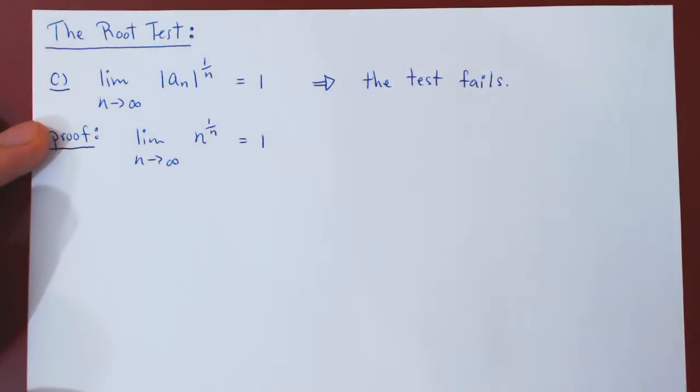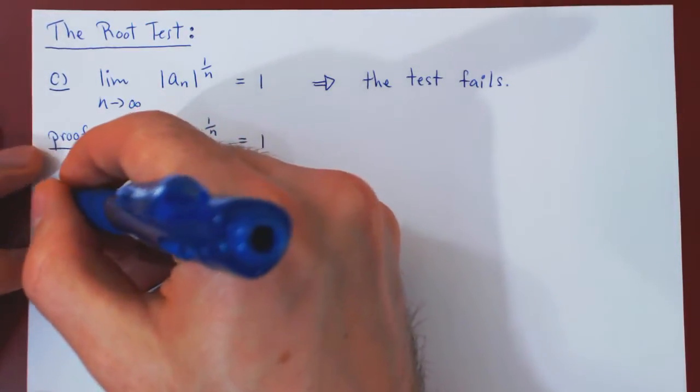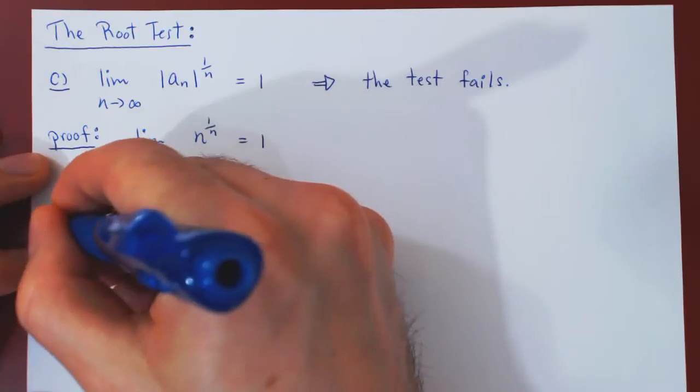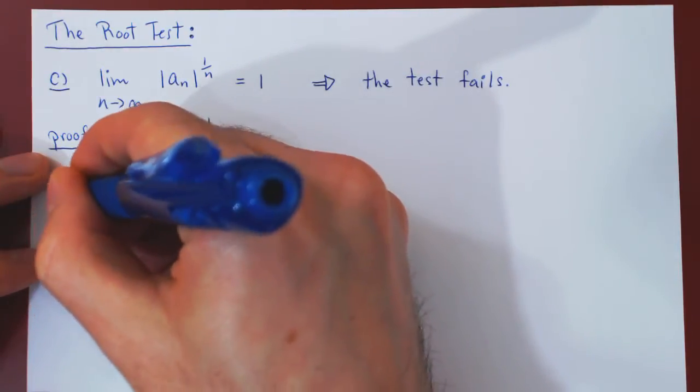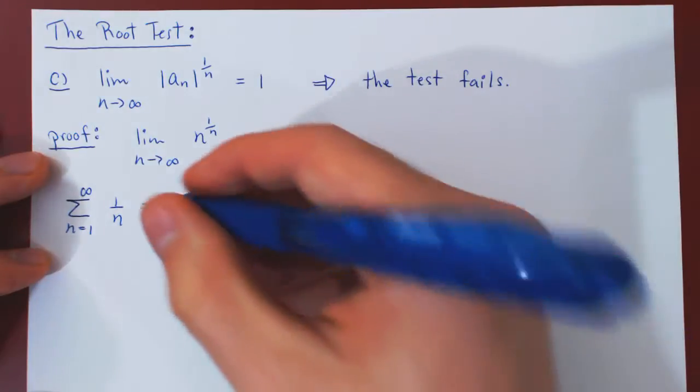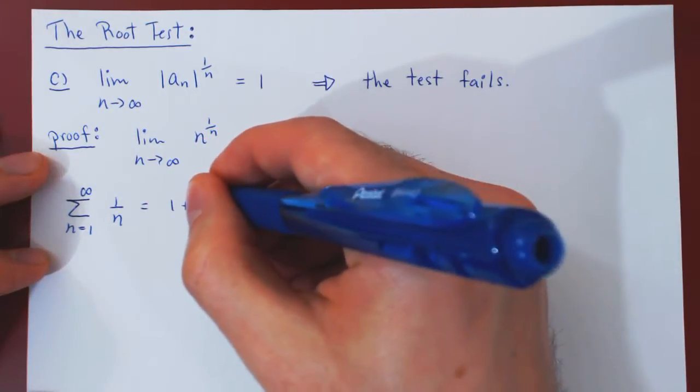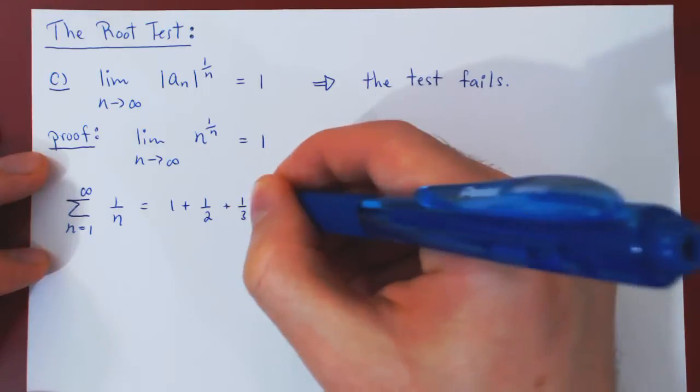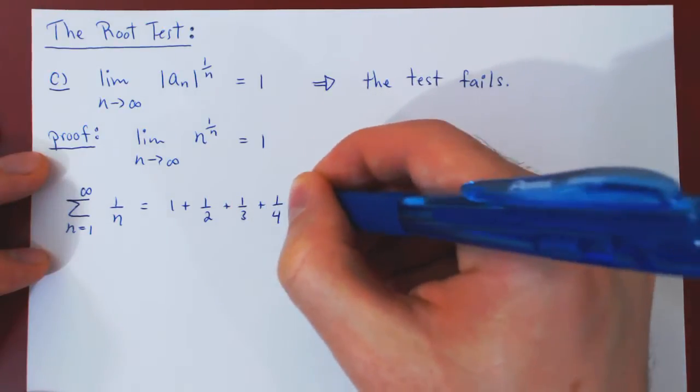So let's look at two very familiar series, the harmonic series, summing from 1 to infinity, 1 over n. So this is nothing but, if we write out the first few terms, 1 plus a half, plus a third, plus a quarter, and so forth.